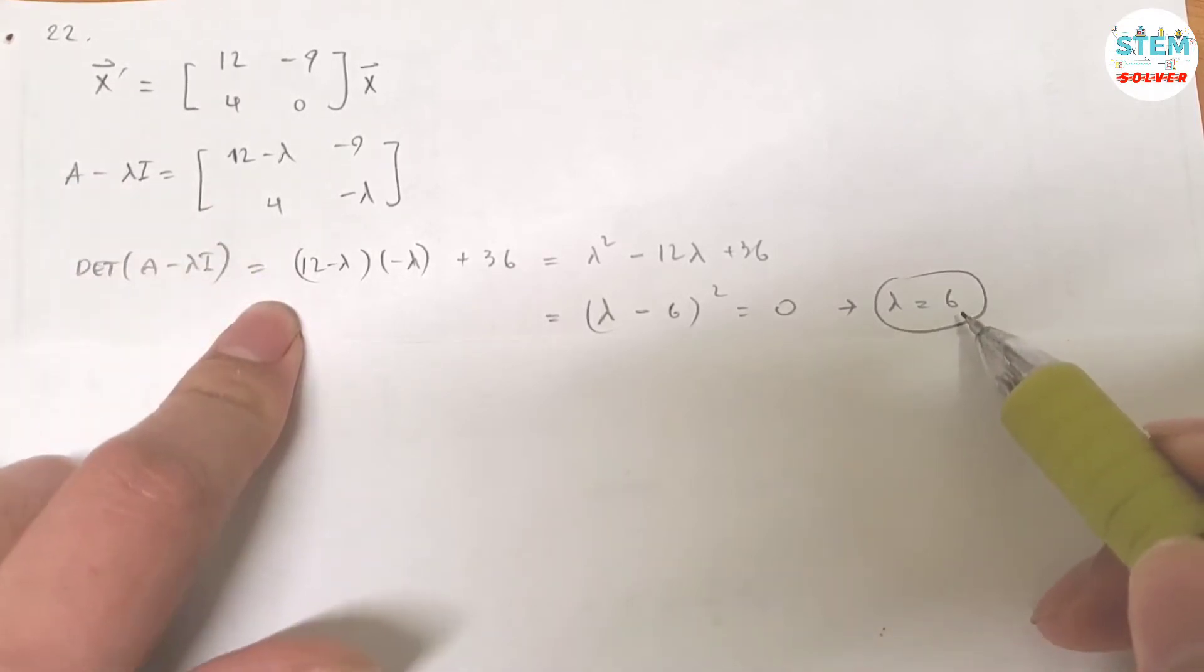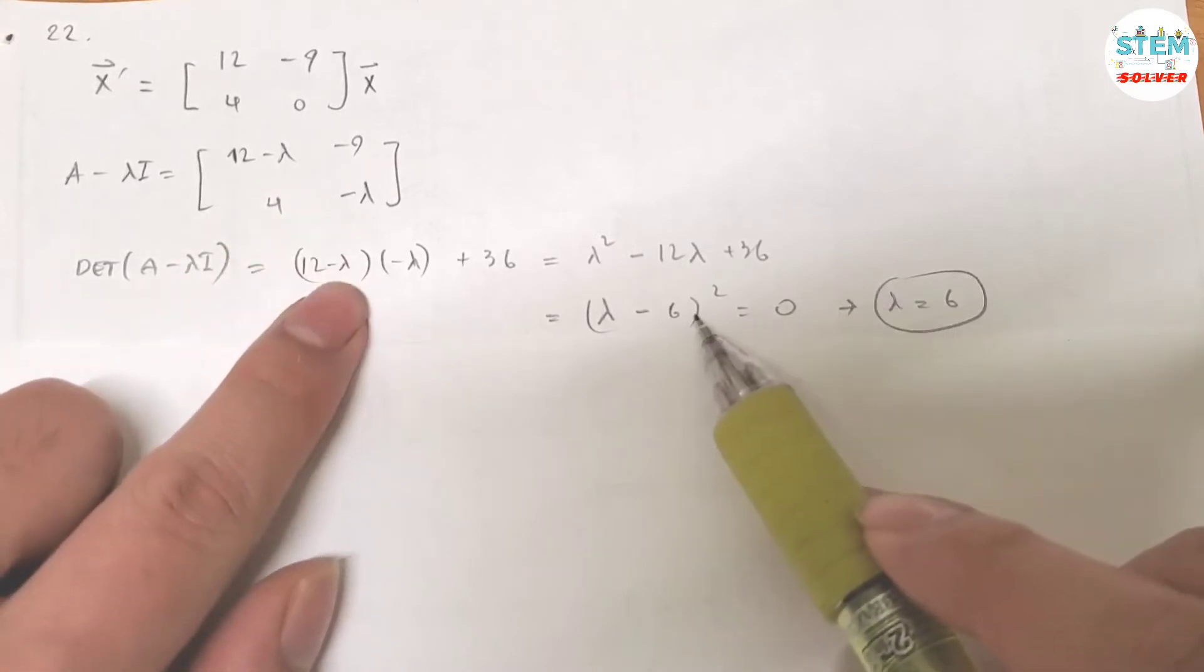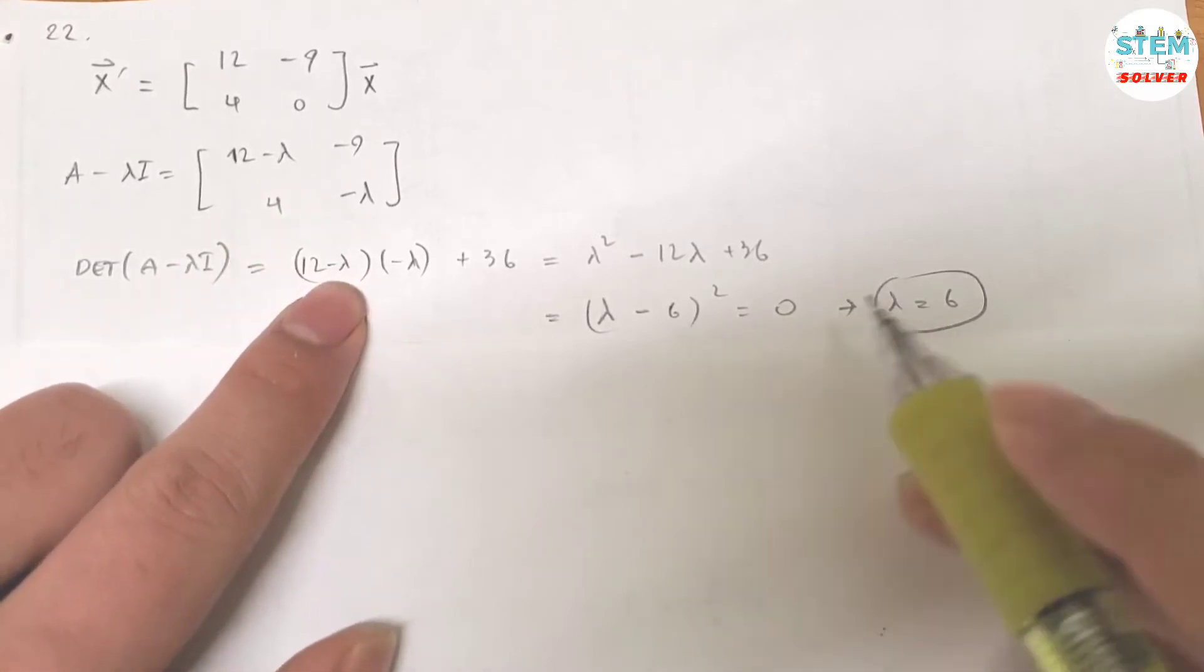I got lambda equals 6. Actually 6, 6 because you have a 2x2 matrix and here's the perfect square, so you have 2 repeated values, which is 6.